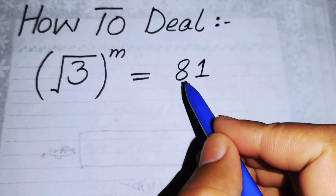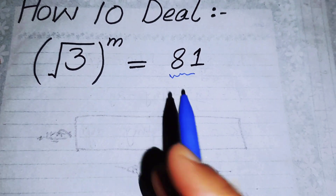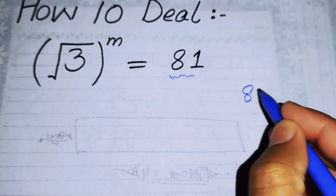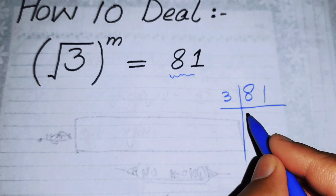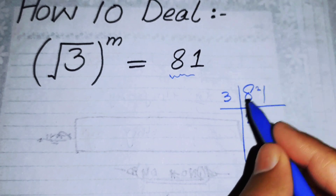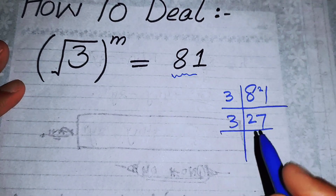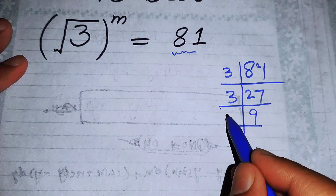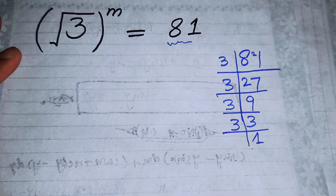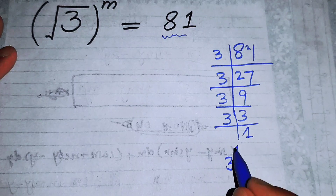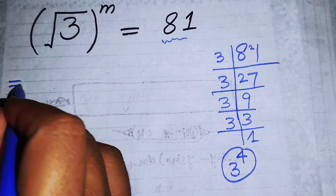First, focus on the right-hand side where we have 81. We will find the prime factors of 81 using a division method. We divide 81 by 3, then 27 by 3, then 9 by 3, and finally 3 by 3. So the prime factors of 81 give us 3 to the power of 4. We replace 81 with 3 to the power of 4.